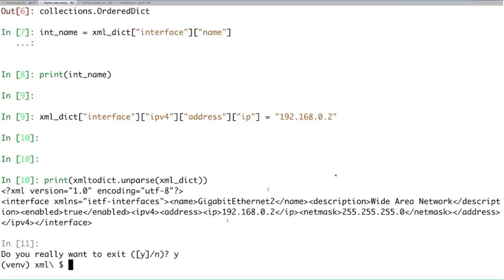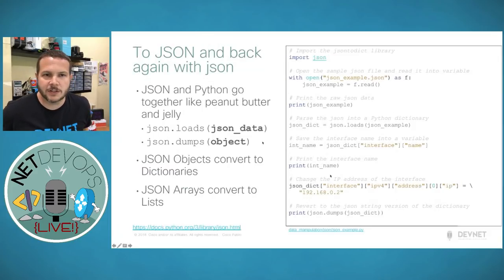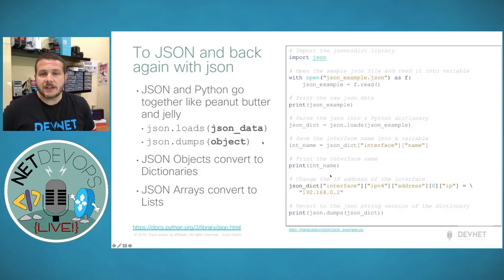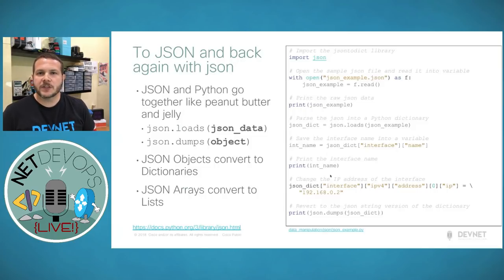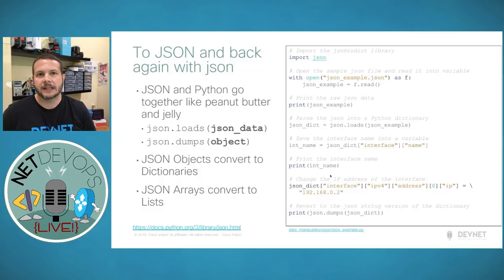Let's move on to what is probably the more popular data format these days: JSON. JSON and Python work really well together. Despite the name JavaScript Object Notation, I find it's actually easier to work with JSON inside Python than in JavaScript.